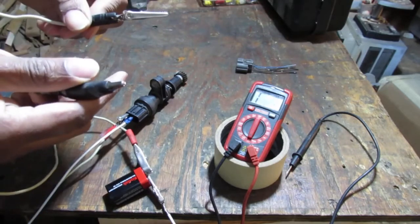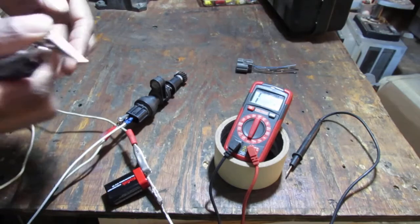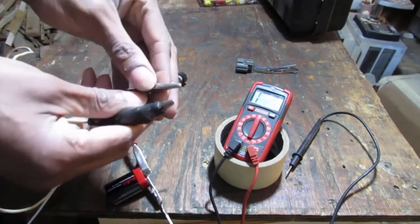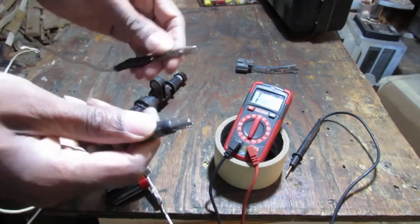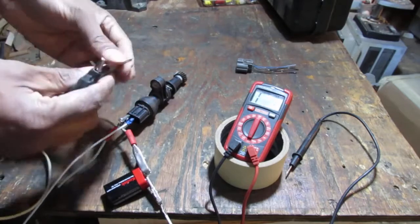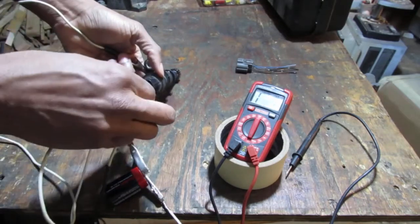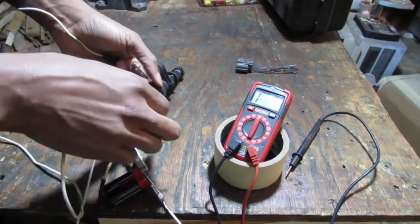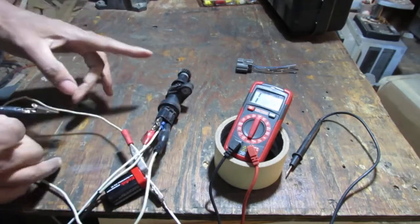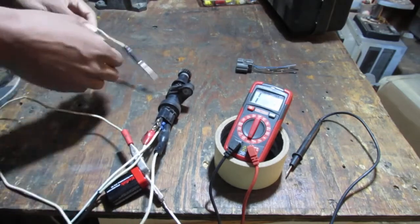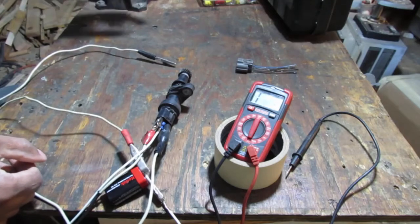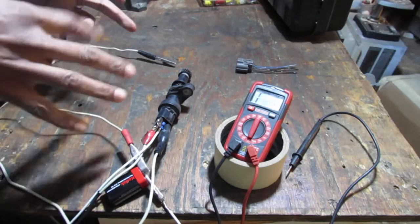This is going to be our output. So we need to measure the resistance coming out of this. That's what we're going to do. So we're going to connect it. Now, since these three wire sensors, they come in two formats.